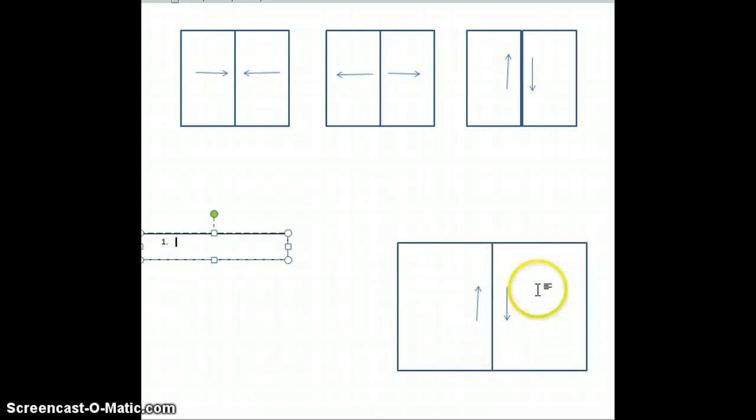So down here we have our transform plate boundary and once again what's happening this plate to the left is going to the north, this plate to the right is going to the south. Now we're going to focus on what is actually happening between these two plates.